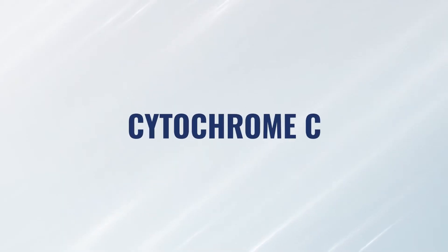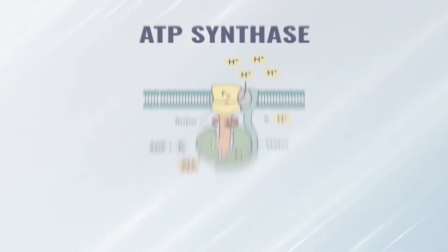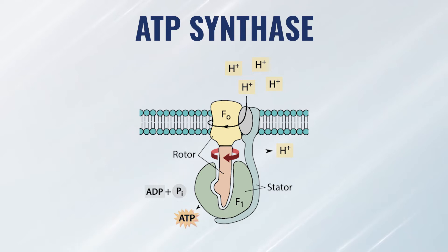We'll just call the stationary complexes complex one, complex two, complex three, and complex four, and there are two mobile carriers. One is called ubiquinol and the other is called cytochrome c. At the end stage you have ATP synthase, which is literally the machinery in charge of making ATP.